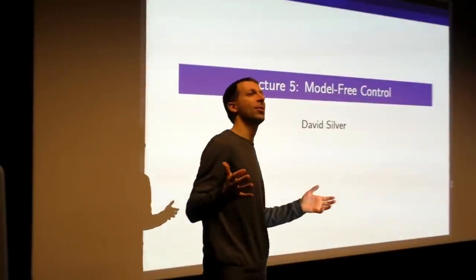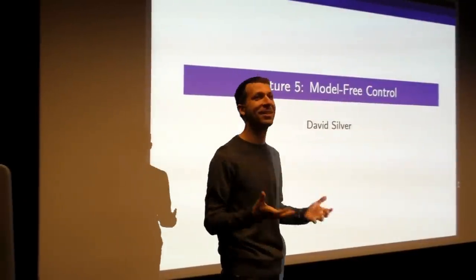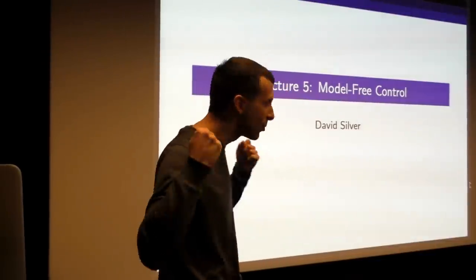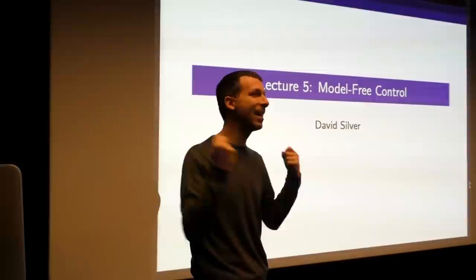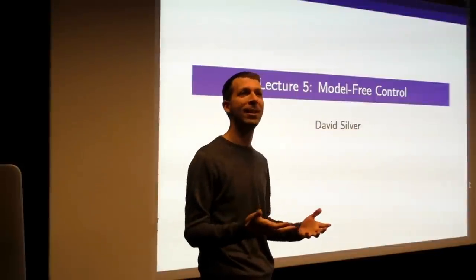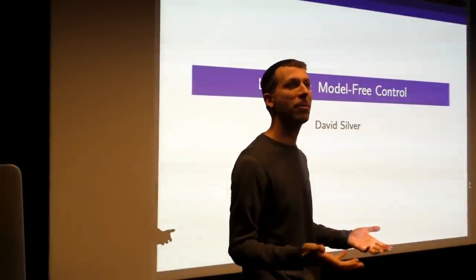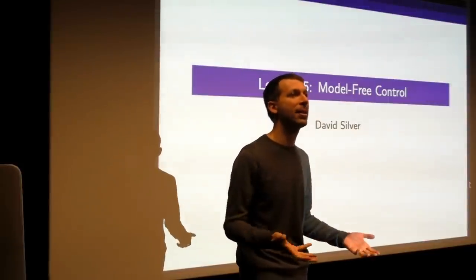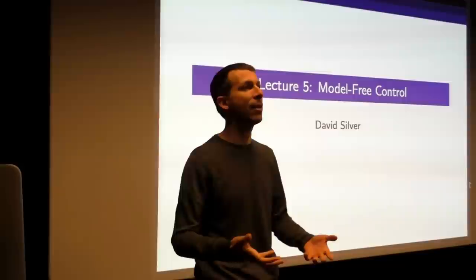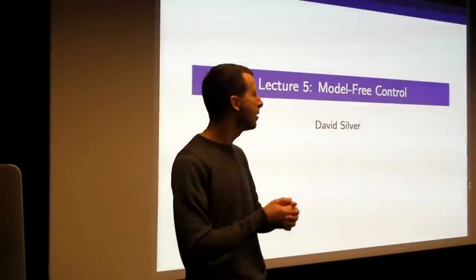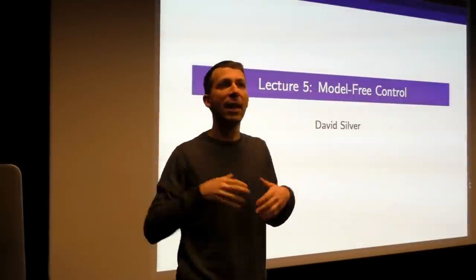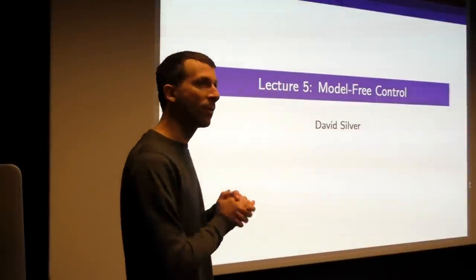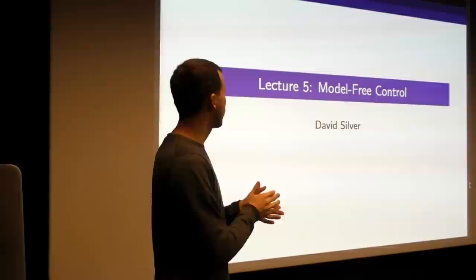In some sense, everything in the course up to this point has been leading to this lecture. We're going to finally find out how, if you drop your robot or agent into some unknown environment and you don't tell it anything about how that environment works, how can it figure out the right thing to do? How can it maximize its reward in that environment without being told anything in advance? That's the goal of this class: model-free control.